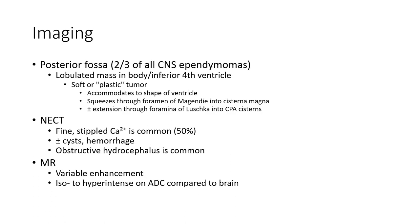Imaging of posterior fossa ependymoma. Two-thirds of all CNS ependymomas. Lobulated mass in the body of the fourth ventricle, inferior fourth ventricle. It is a plastic tumor that accommodates to the shape of the ventricle, squeezing through the foramen of Magendie into the cisterna magna, plus or minus extension through the foramen of Luschka into the CPA cistern.